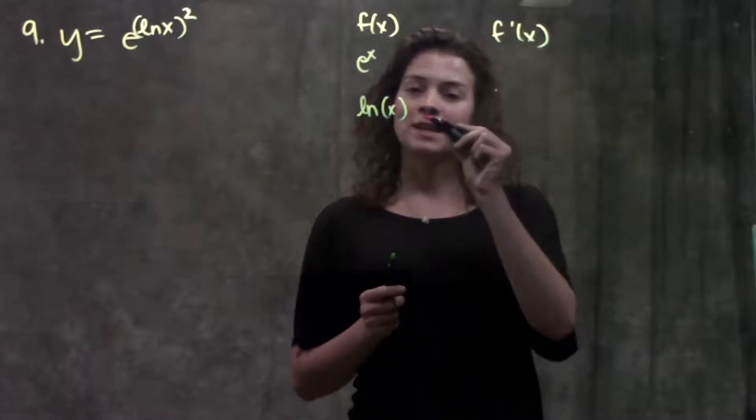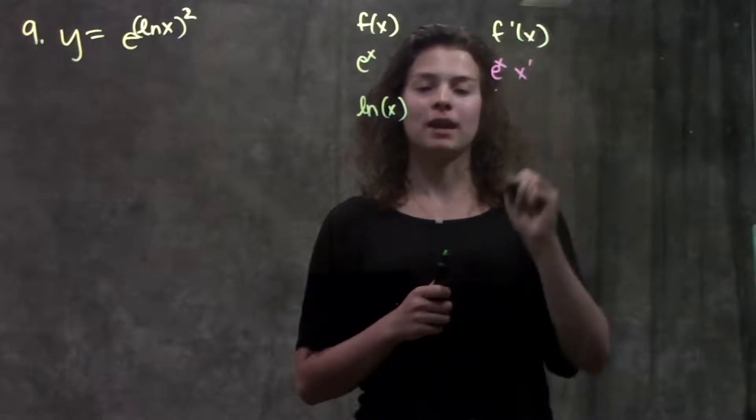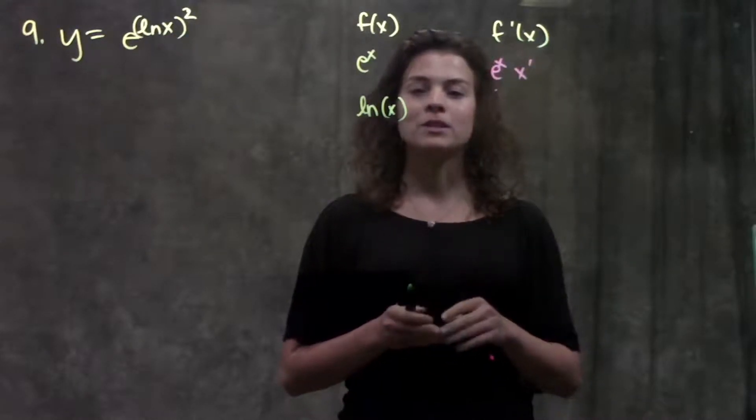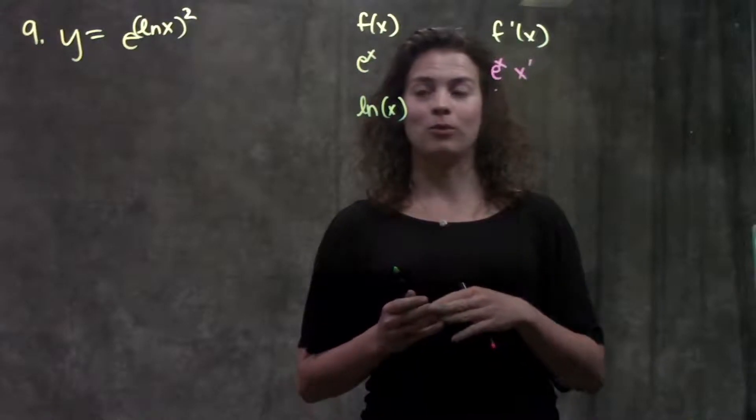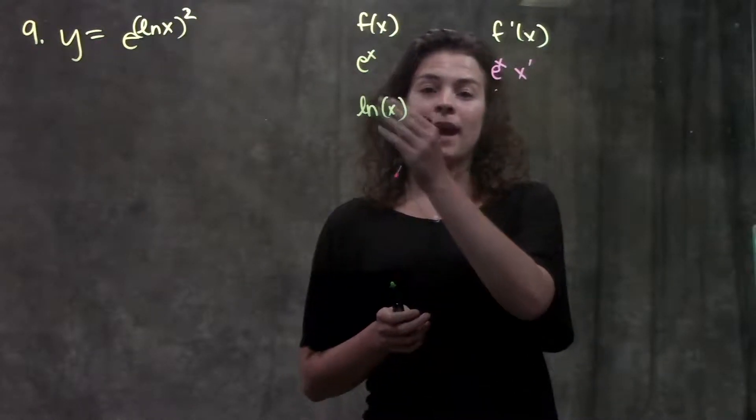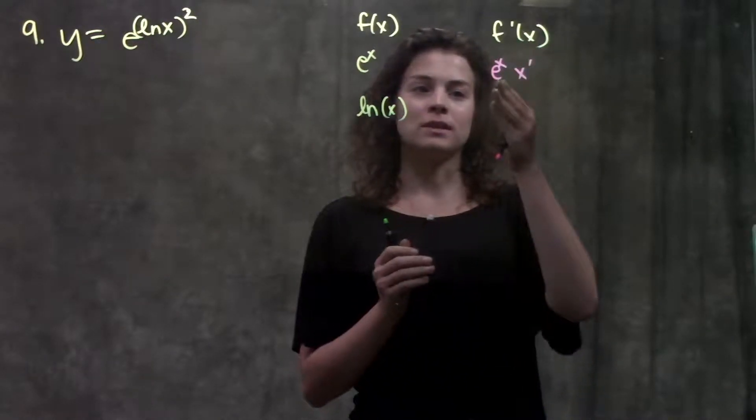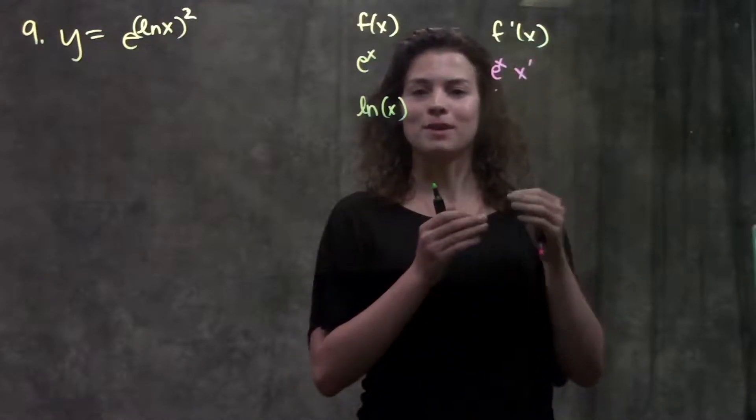When we have the function e to the x, the derivative is e to the x times x prime. I'm going to write it a little bit differently from the book just so that we remember to always use chain rule with these functions. Remember, it doesn't have to be just e to the x. It could be e to the something. The derivative of e to the something is just e to that same something times the derivative of that something.